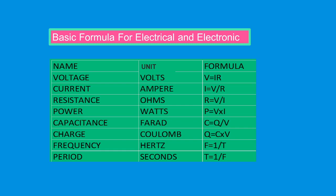Basic formula for electrical and electronics. Name, units and formula. Voltage. The unit of voltage is volts and the formula is V equals I times R.